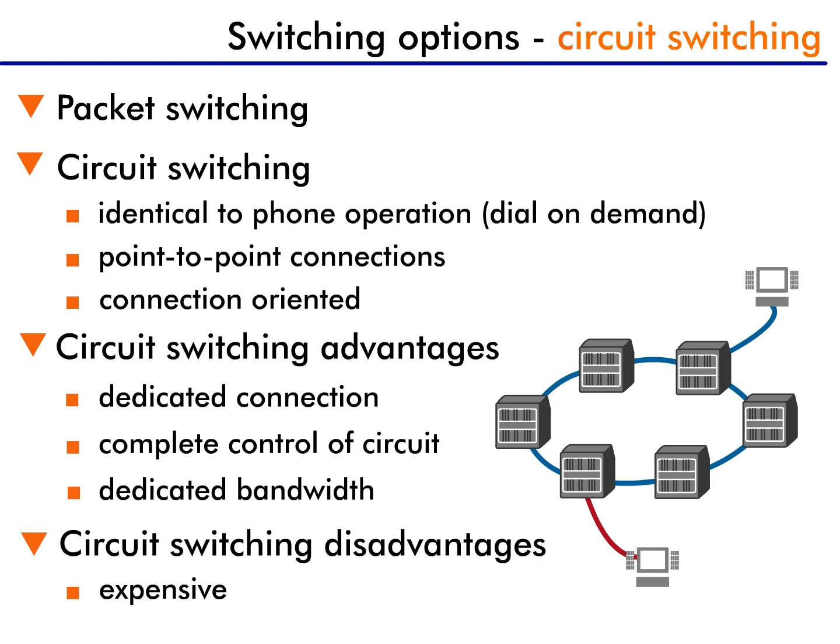There are two primary ways to set up a WAN connection. One is called packet switching, and the other is called circuit switching. Let's start with circuit switching. This type of WAN switching uses the same operation the phone companies have always used for voice communication. Circuit switching is usually used for dial-on-demand calls, which are calls that are typically short in duration.